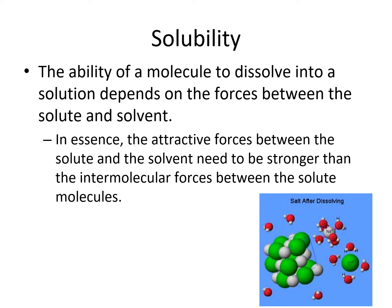Ionic substances with higher charges on their ions are less likely to be soluble in water. For example, magnesium oxide has a Mg²⁺ and O²⁻ charge, whereas sodium chloride has Na⁺ and Cl⁻. The attraction between +2 and -2 charges is much stronger than between +1 and -1, so magnesium oxide is less likely to dissolve in water than sodium chloride.